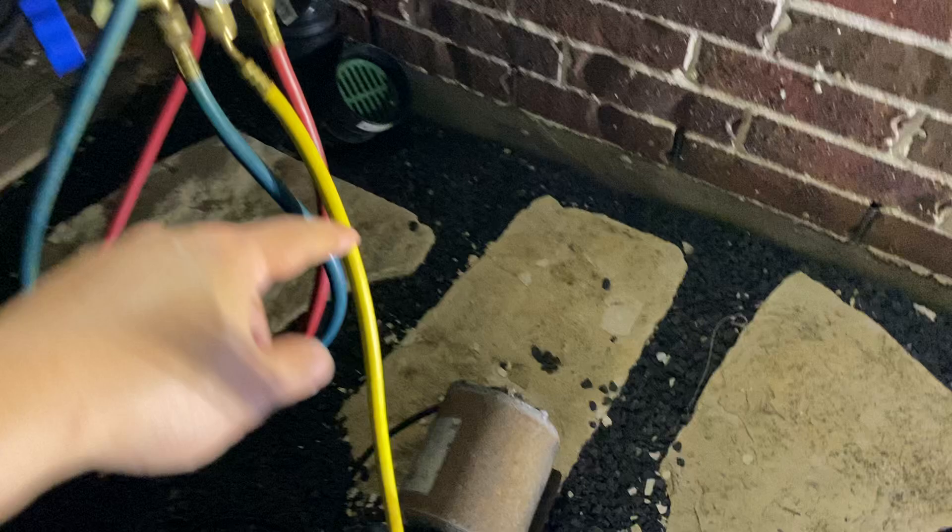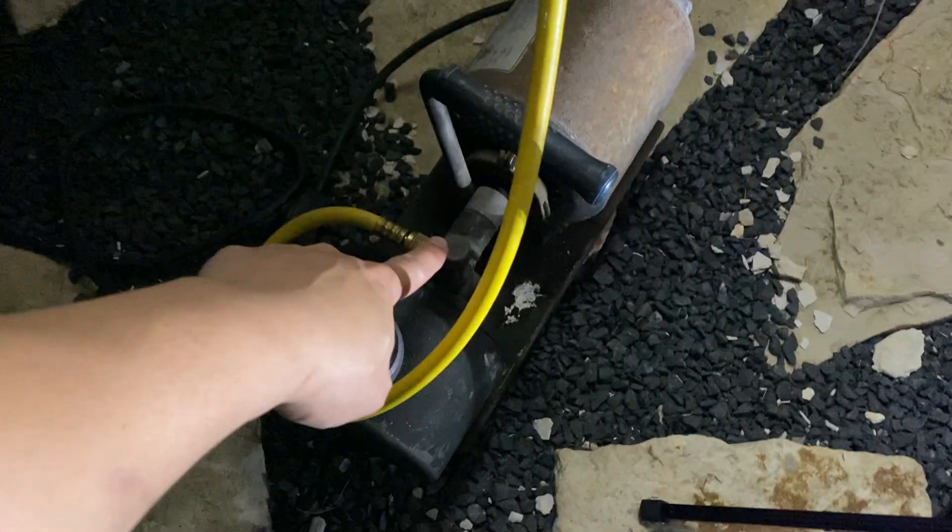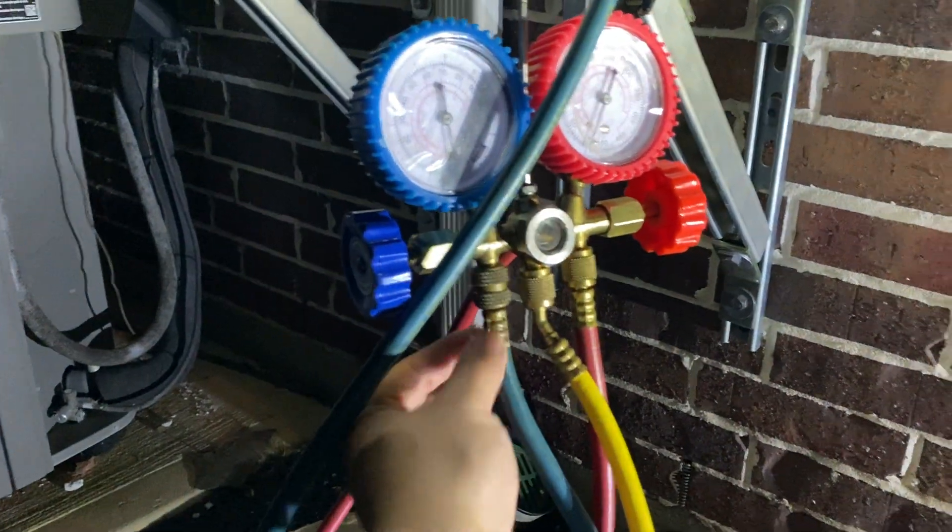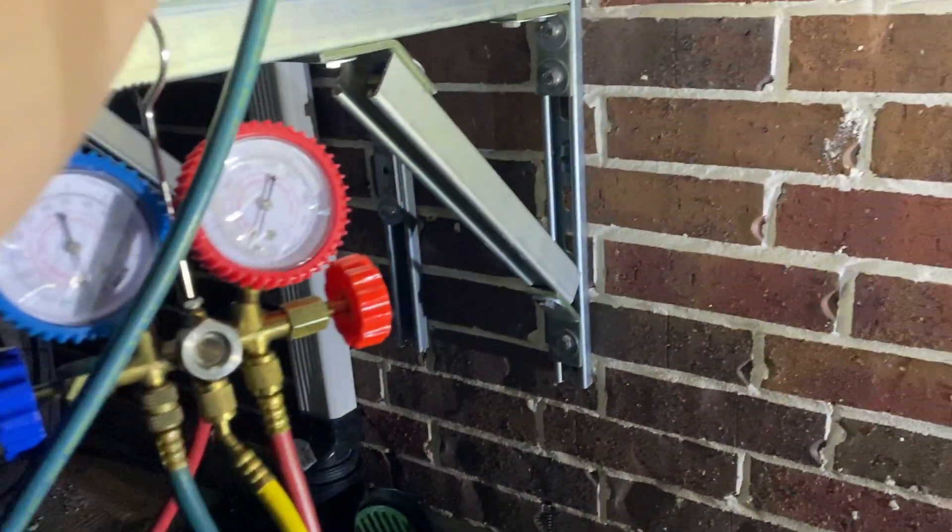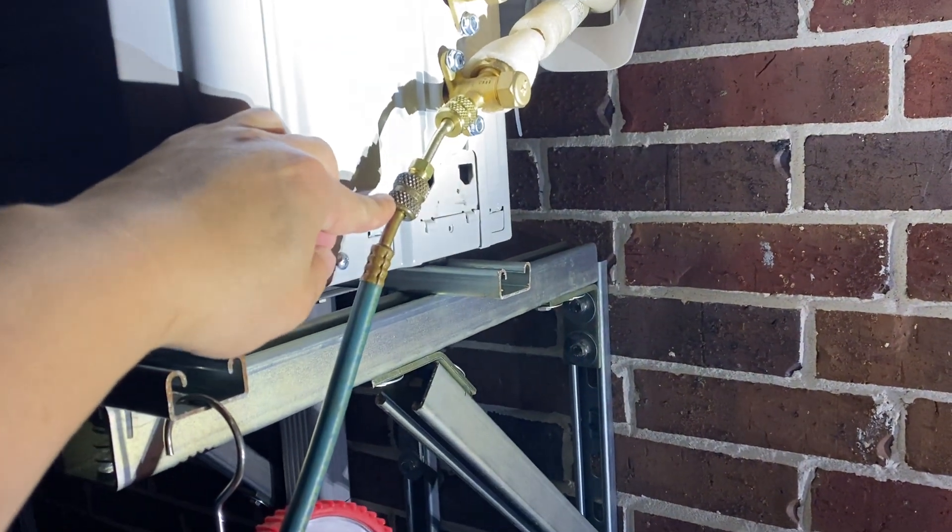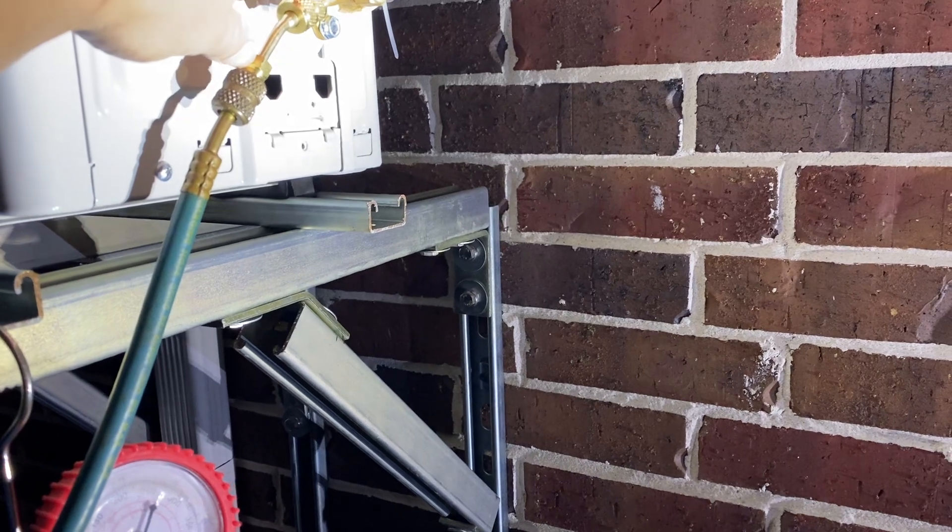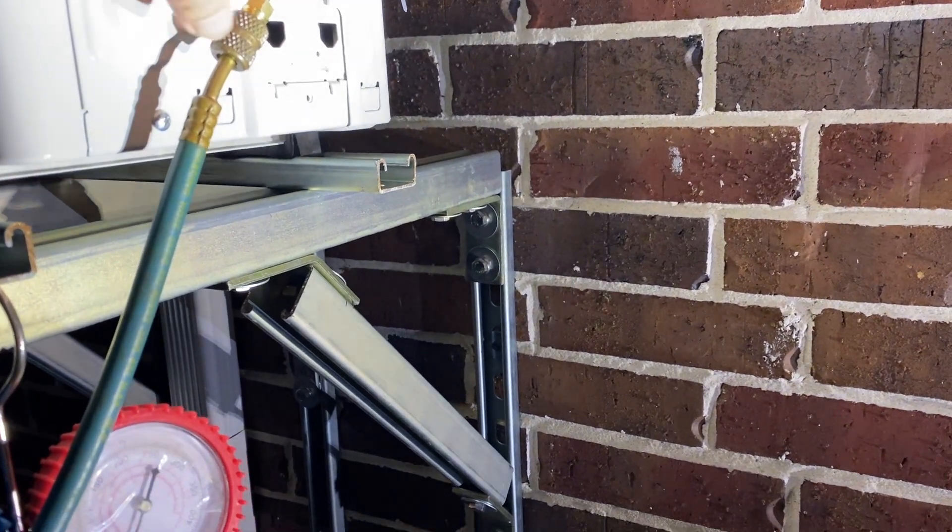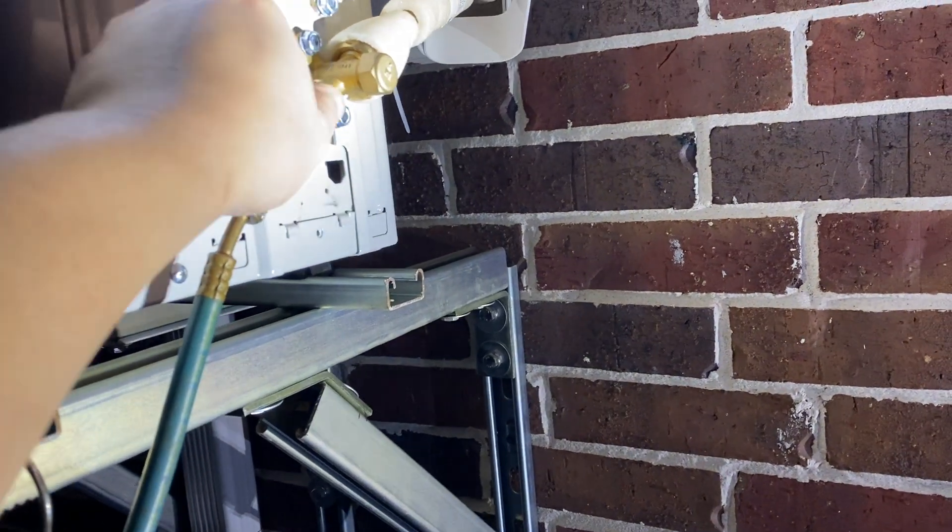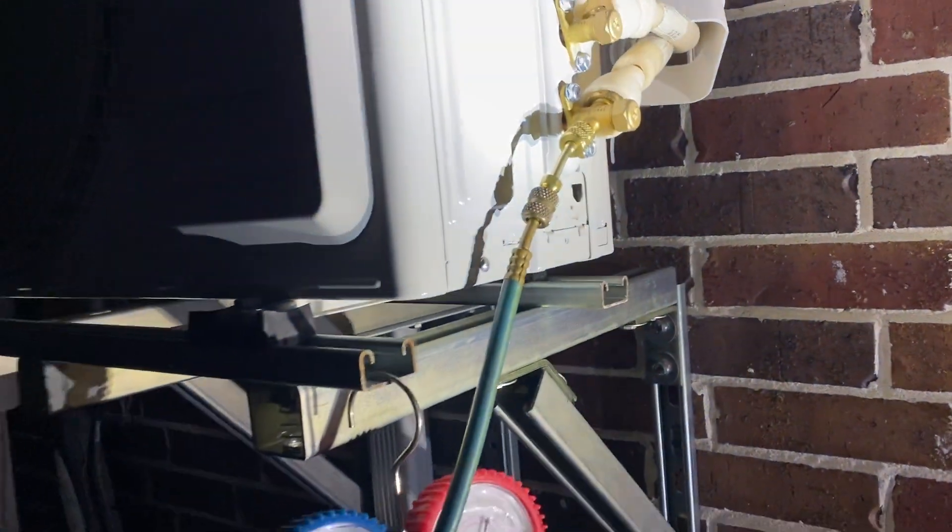So the first thing you want to do is connect your vacuum pump. You need the yellow line or your middle line right here, and then you need to connect your blue line over here. Then there's an adapter that you need between your lines and the AC unit. Don't know why they do that, but that's what you need.